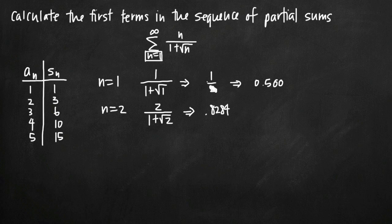But remember, because we're dealing with the sequence of partial sums, we have to add this value, the value of the second term, to the first term to get the sequence of partial sums, which is approximately 1.3284. And we can round that to about 1.328.